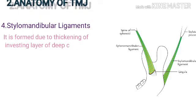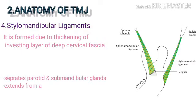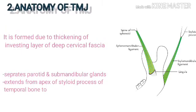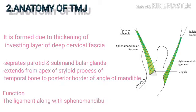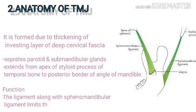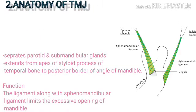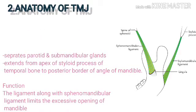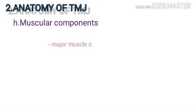The stylomandibular ligament is formed by thickening of the investing layer of the deep cervical fascia. It separates the parotid and submandibular glands, extending from the apex of the styloid process of the temporal bone to the posterior border of the angle of the mandible. Along with the sphenomandibular ligament, it limits excessive opening of the mandible.